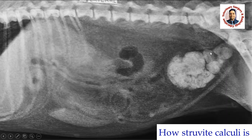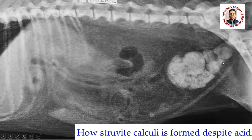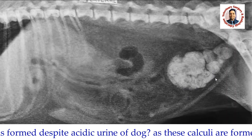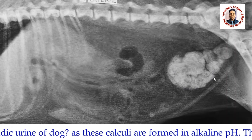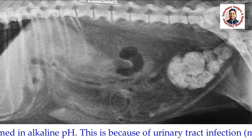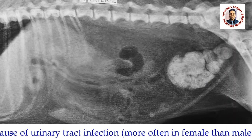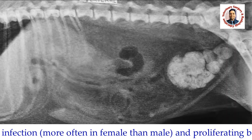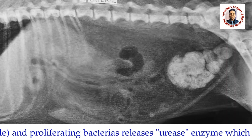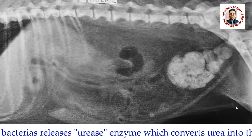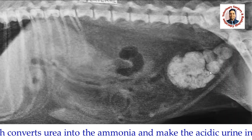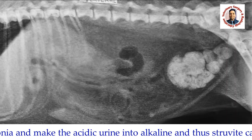One question arises: why are struvite calculi formed in dogs? We know that dog urine is acidic in nature, yet these calculi are formed in an alkaline pH. The reason is that in female dogs, and even in male dogs, most calculi form after a urinary tract infection. When there is a urinary tract infection, the bacteria present release the urease enzyme, which converts urea into ammonia, and that is responsible for the alkaline pH.